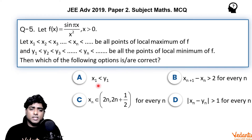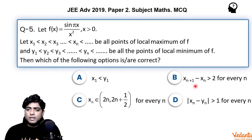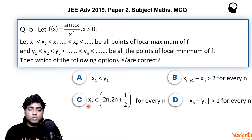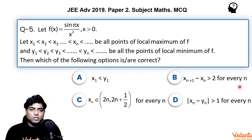Option A: we need to check whether x₁ < y₁ or not. Option B: check for general n whether xₙ₊₁ − xₙ > 2 or not. Option C: xₙ belongs to (n, 2n + ½) for every n. Option D: |xₙ − yₙ| > 1 for every n.